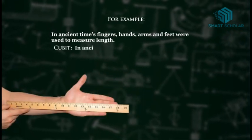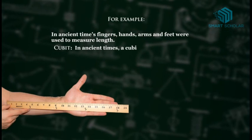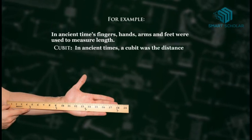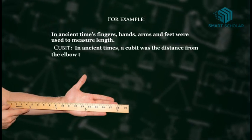Cubit: In ancient times, a cubit was the distance from the elbow to the fingertips. A cubit is about 18 inches.